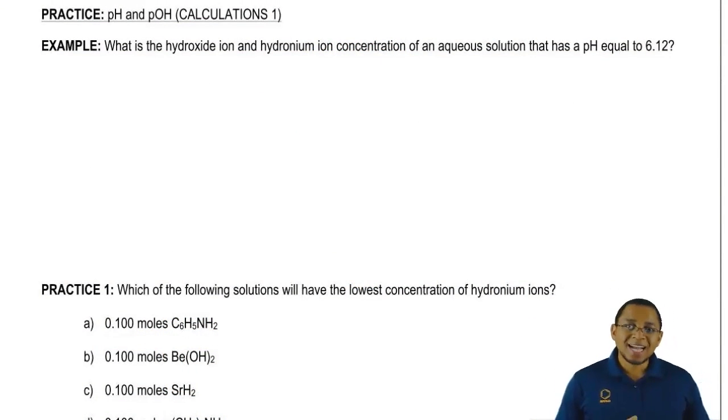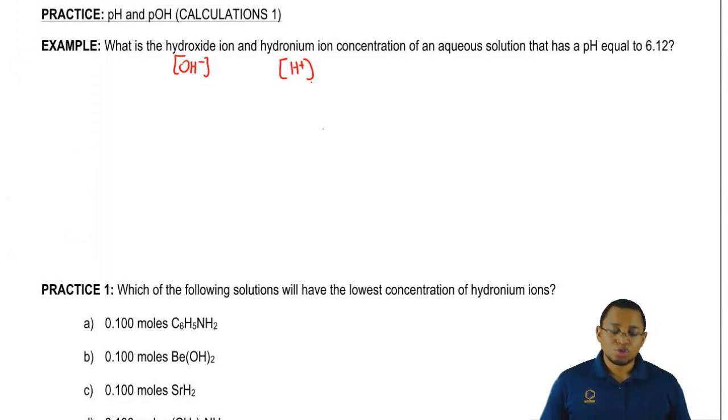Here it says what is the hydroxide ion (OH minus) and the hydrogen ion concentration, or hydronium ion concentration actually (that's H plus), of an aqueous solution that has a pH equal to 6.12. So we have pH, we need to find OH minus and H plus. Remember we're able to derive a formula that connects us between H plus and pH.